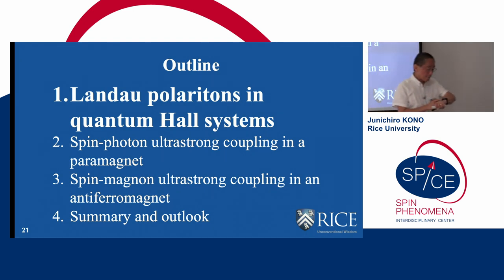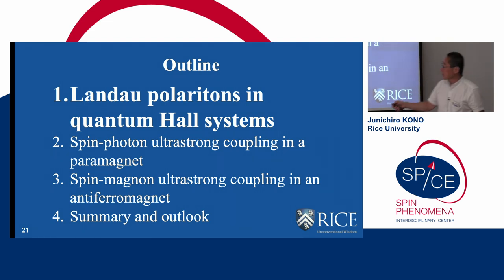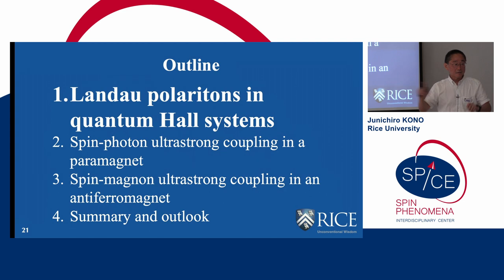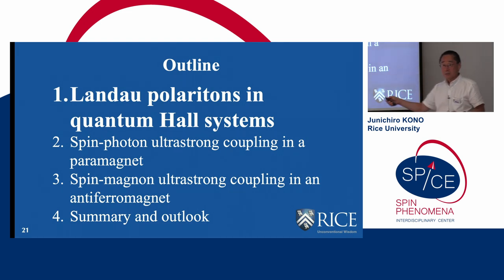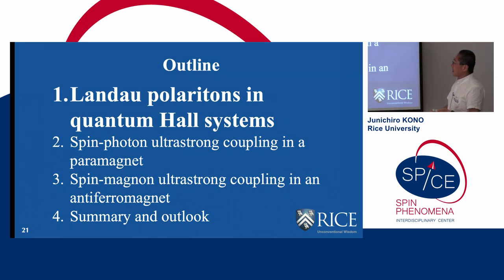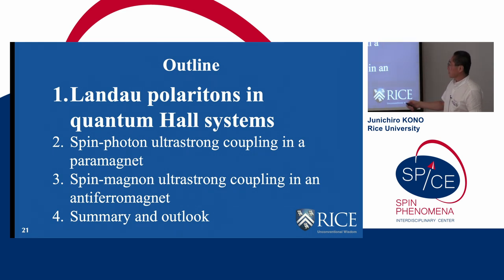I have three experimental systems to talk about today. The first we know very well but it's not related to spins, so I won't spend too much time on it. We have many papers on Landau polaritons and quantum Hall systems. I want to quickly go through this because it gives some basic descriptions about ultra-strong light-matter coupling — it's a very tunable system and easy to describe. Then I'll talk about spin-photon ultra-strong coupling and then spin-magnon ultra-strong coupling.